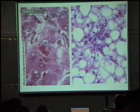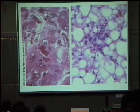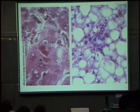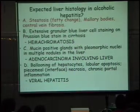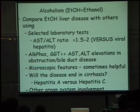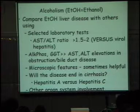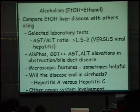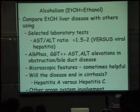The classic Mallory body — on regular H&E stain — is just a collection of cytoplasmic filaments, along with fatty change. You can barely recognize this liver, it has so much fat in it. Compare alcoholic liver disease with other diseases — the AST/ALT ratio greater than 1.5 to 2 in alcoholic disease can be very helpful clinically. Mallory bodies are characteristic of that pattern.